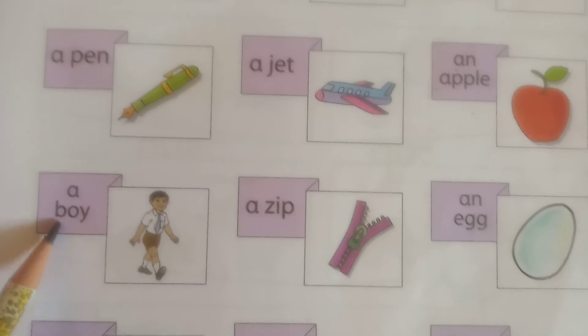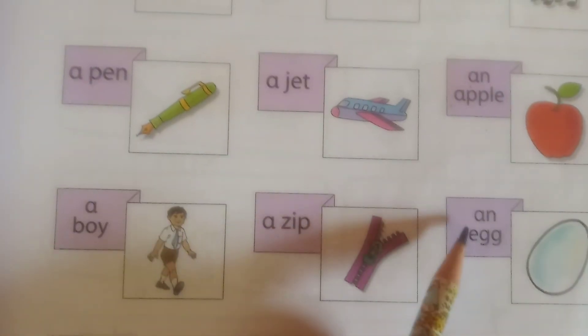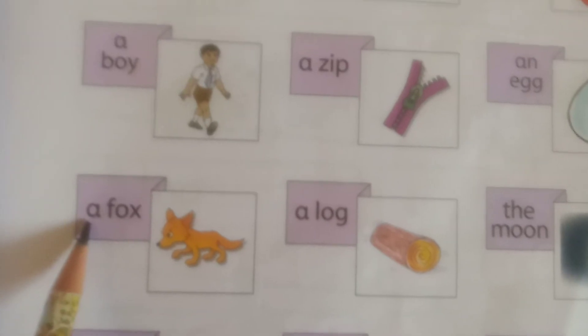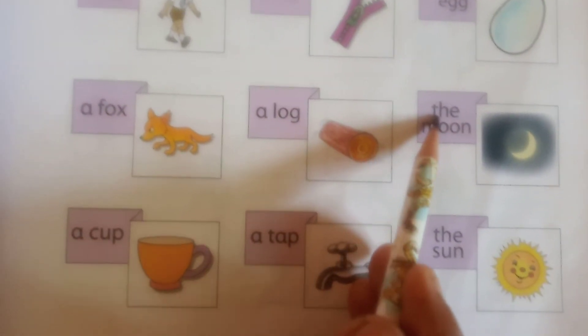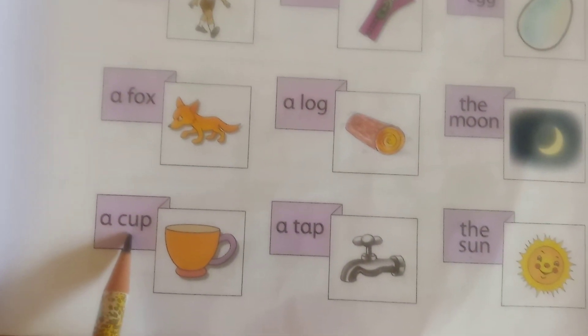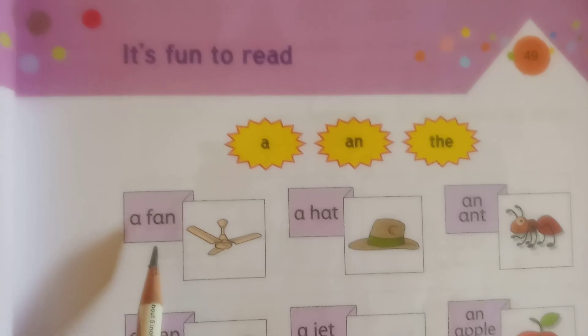A boy — B, O, Y. A zip. An egg — E, double G. A fox. A log. The moon — M, double O, N. I said that for moon and sun we use the article 'the'. The sun — S, U, N. A cup. A tap. The sun.